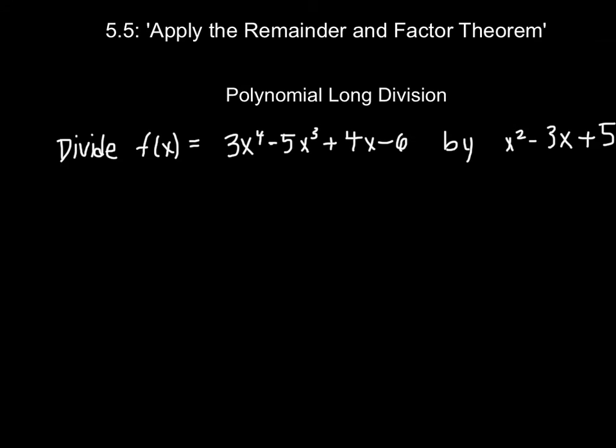So section 5.5 is titled Apply the Remainder and Factor Theorem, but it really just deals with division of polynomials. We're going to start with polynomial long division. So we're told to divide f(x) equals 3x to the fourth minus 5x to the third plus 4x minus 6 by x squared minus 3x plus 5. So this is really going to be set up just as a big division problem.